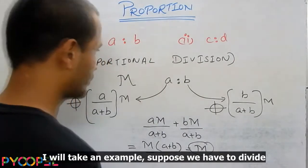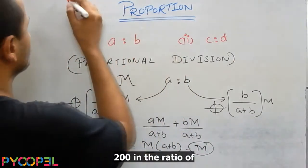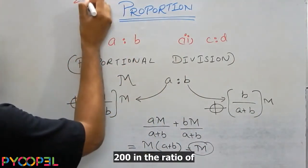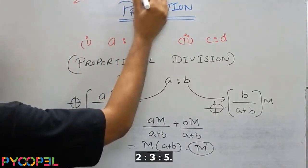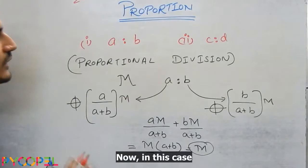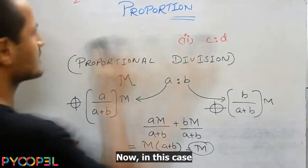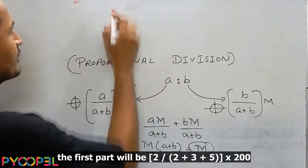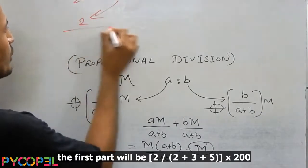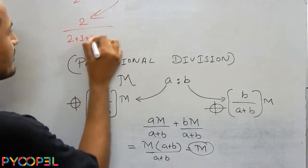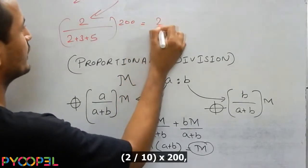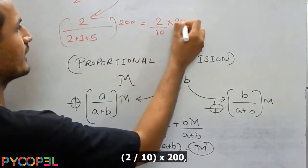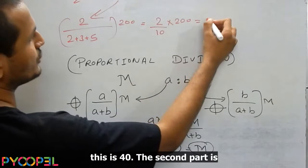I will take an example. Suppose we have to divide 200 in the ratio 2 is to 3 is to 5. Now in this case, the first part will be 2 upon 2 plus 3 plus 5 into 200. This is equal to 2 by 10 into 200 or this is 40.